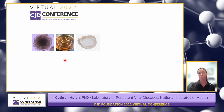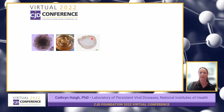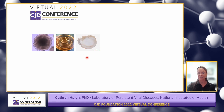We were able to show that we could infect them with sporadic CJD prions. What you see here, this brown accumulation, is the disease-associated prions within the organoids.